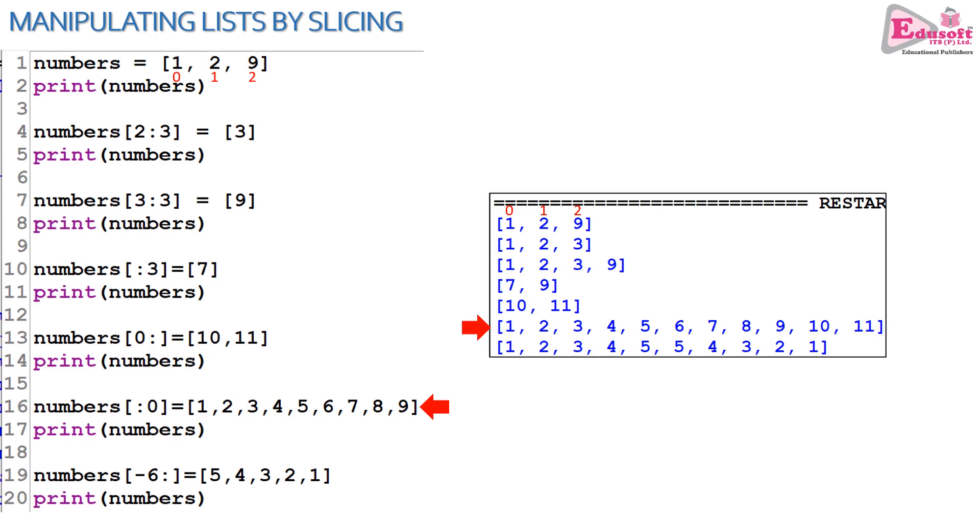See line number 16, blank colon 0, that means 0 to 0, the very first position. So 1, 2, 3, 4, 5, 6, 7, 8, 9 will be inserted, and values 10 and 11 will be shifted towards the right hand side.